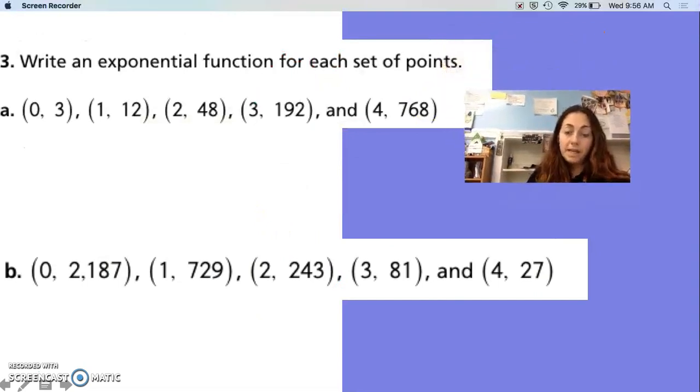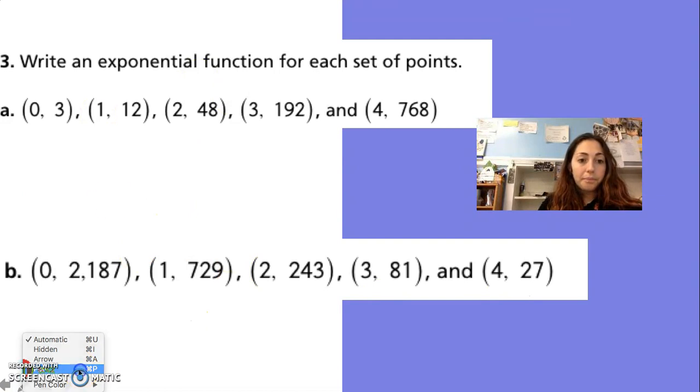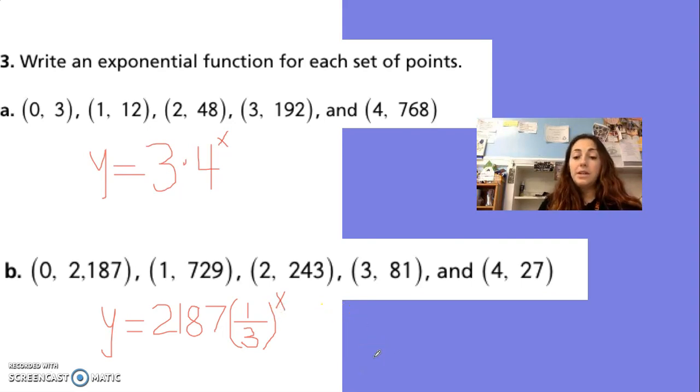Last 3 to do - find the equation for each of these. Hit pause and then we'll go over it. So the equation is y equals - my initial value is 3, and what's happening from one to the next I multiply by 4, so it's 4 to the x power. For this one, my initial value is 2,187, and what's happening as I go across, I've got to divide - if I'm thinking divide, it's really multiply by 1 over 3 to the x power.